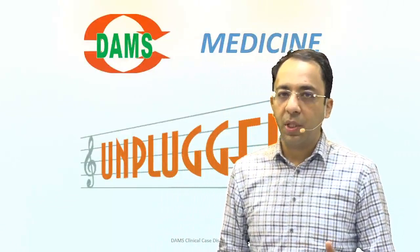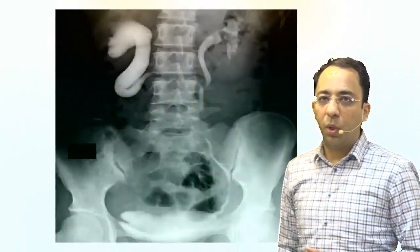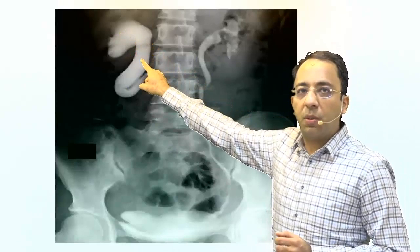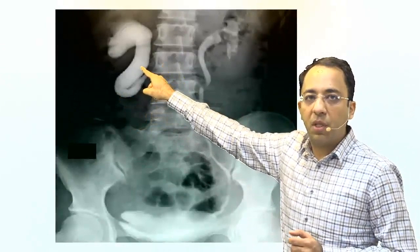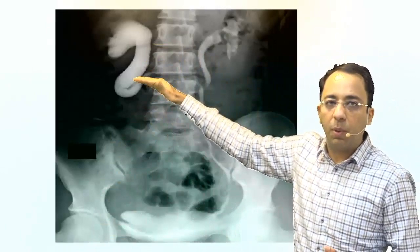Let's begin with the image and see how many of you are able to identify what I'm showing. This is an intravenous pyelogram — you can see this is the left kidney and this is the right kidney. The problem is on the right side. Tracking the right kidney pelvicalyceal system, the ureter, the mid ureter — and here it goes like a fishhook. This is called an S-shaped or fishhook deformity of the mid ureter.